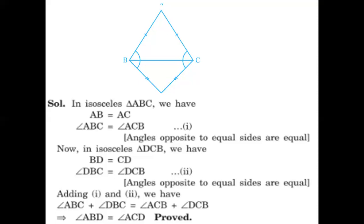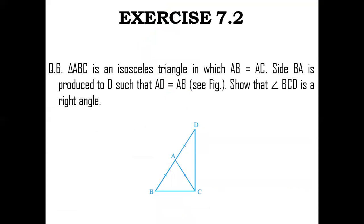I hope the solution was clear and easy. Let us get to question number 6. Triangle ABC is an isosceles triangle in which AB is equal to AC. It is also given that side BA is produced to D such that AD is equal to AB. Looking at the figure, there are two equal things given: AB is equal to AC, and AB is also equal to AD. We are supposed to prove that angle BCD is a right angle.